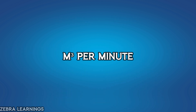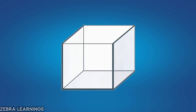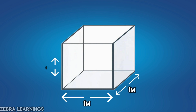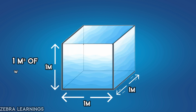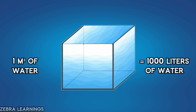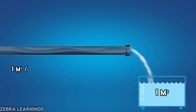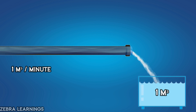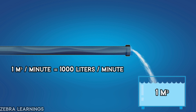Next is cubic meters per minute. A cubic meter is a tank that is 1 meter wide, 1 meter long, and 1 meter high. The water that fills this tank is 1 cubic meter of water. 1 cubic meter of water is equal to 1000 liters of water. So, 1 cubic meter per minute means that 1000 liters of water flow through the pipeline in 1 minute.